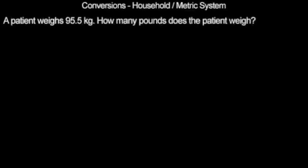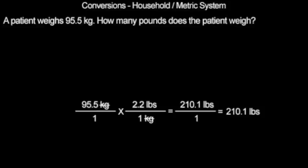Pause the video, try this problem on your own, and continue when you are ready for the answer. 95.5 kilograms is equal to 210.1 pounds.